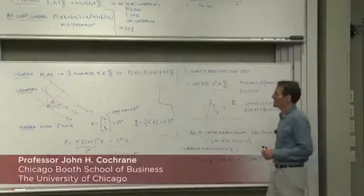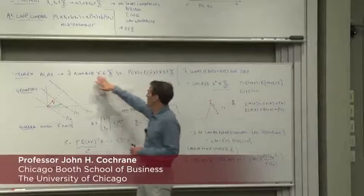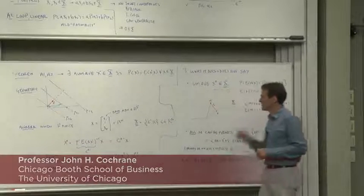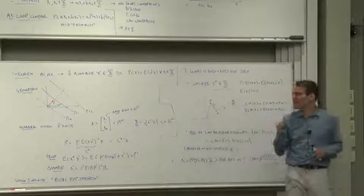So let's look a little more closely at our first existence theorem, the theorem that says that the law of one price implies a unique discount factor in X that prices all the payoffs. What does that say, really, and what does it not say?